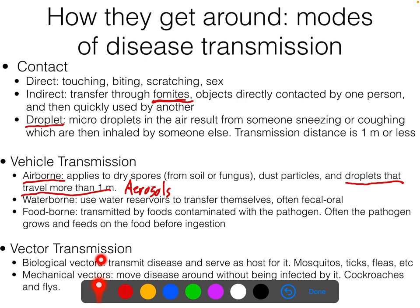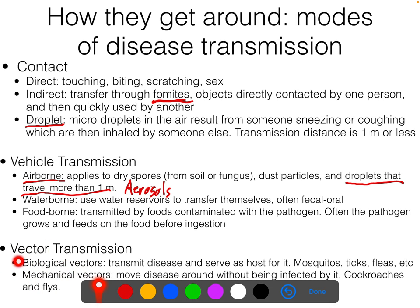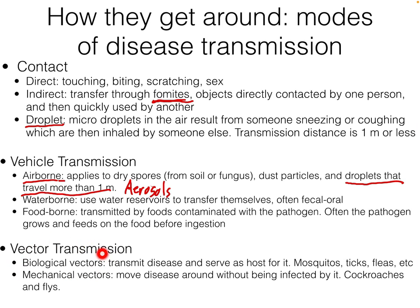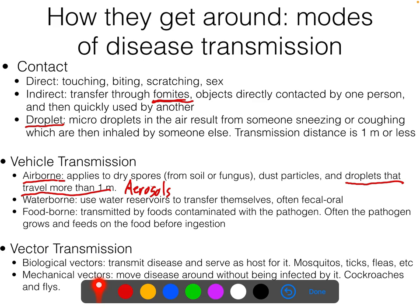Last, we have vector transmission — this is where a thing that moves transfers the disease. Vectors come in two types: biological and mechanical. With biological vectors, the thing transferring the disease has the pathogen inside it and usually serves as a host — the pathogen often completes an important part of its life cycle inside the biological vector. These are mostly going to be insects like mosquitoes, ticks, and fleas.